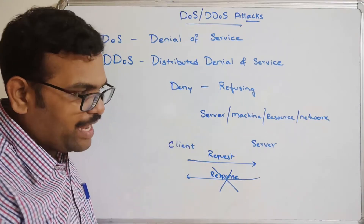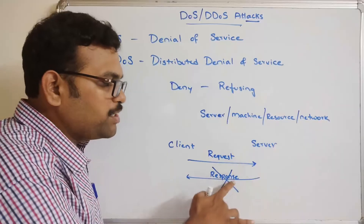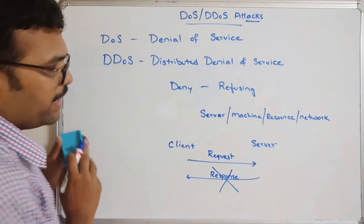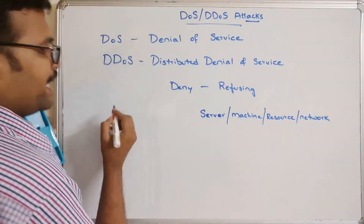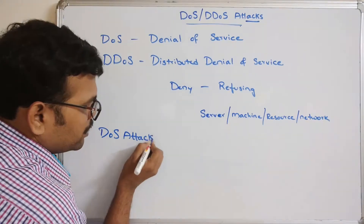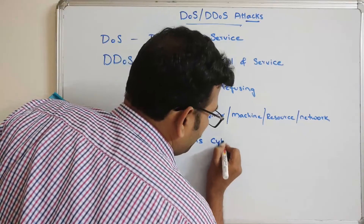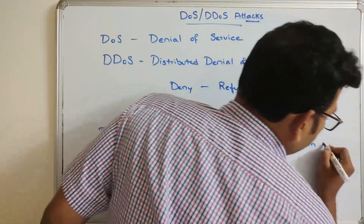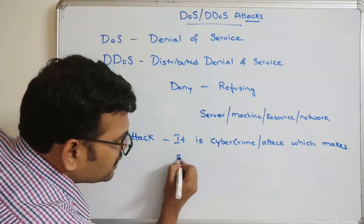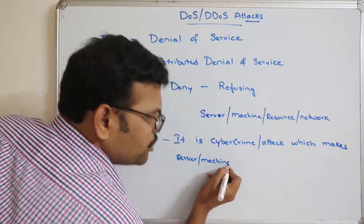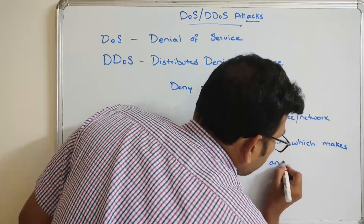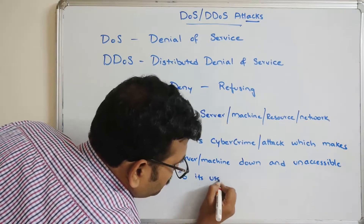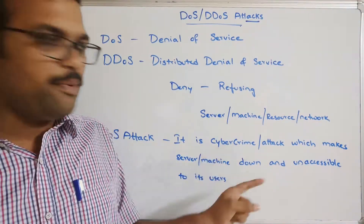The attacker will make the server go down and stop the service to its clients — that's what we call a Denial of Service attack. So the definition: a DOS attack is a cybercrime or an attack which makes a server, machine, or any other resource down and inaccessible to its users.